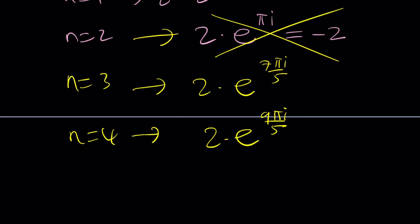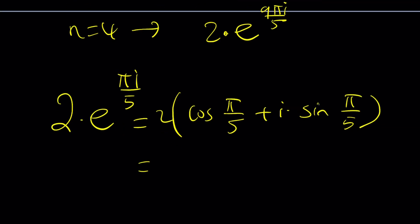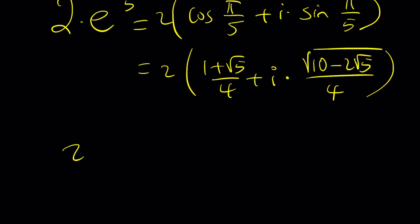Now let's focus on one of these solutions, which is 2 times e to the power pi i over 5, which can be written as 2 times cosine of pi over 5 plus i times sine pi over 5. Let's write it in standard form. As you know, cosine of pi over 5, which is cosine of 36 degrees, is 1 plus root 5 over 4. And sine of 36 degrees is square root of 10 minus 2 root 5 divided by 4. After multiplying by 2, we can write z sub 1, the first solution as 1 plus root 5 over 2 plus i times the square root of 10 minus 2 root 5 all over 2.